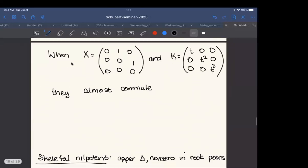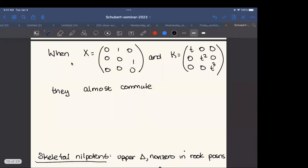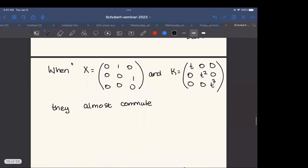Now, here's an example, sadly, of a situation where the full torus does not act on this matrix X, where X is nilpotent, it is like regular nilpotent. It's got these ones just above the diagonal. On the other hand, this particular matrix K, the collection of matrices, almost commutes with X.